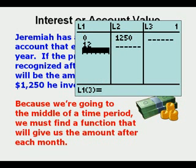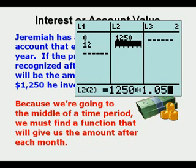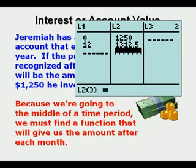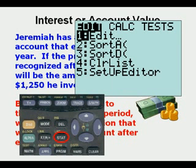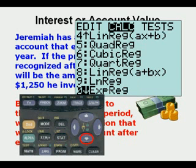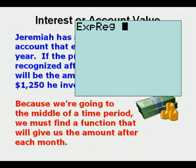How much is that amount going to be? It's going to be $1,250 times a factor of 1.05. We got that 1.05 by taking 100%, adding the 5% for 105 total, then converting to a factor by dividing 105 by 100. We enter this and it calculates $1,312.50 after 12 months. Now we find the function by going to Stat, Calc, 0, press Enter twice, and there is our function.